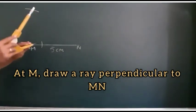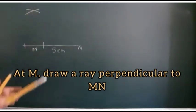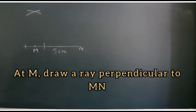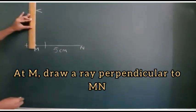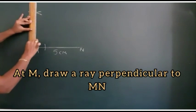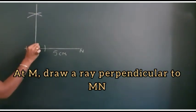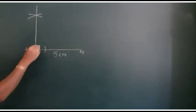From these two arcs draw another two arcs with convenient radius and join the point of intersection of these two arcs and M. This line is perpendicular to the given line MN and this is 90 degrees.